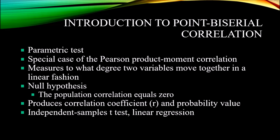The point-biserial correlation is a parametric test. It's a special case of the Pearson product-moment correlation. Both measure to what degree two variables move together in a linear fashion, and they both test the same null hypothesis — that the population correlation is equal to zero. The Pearson product-moment correlation requires two variables measured at the continuous level. The point-biserial correlation requires one variable at the continuous level and one at the nominal level with two groups — more specifically, a dichotomous variable.